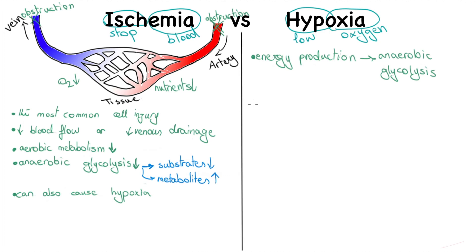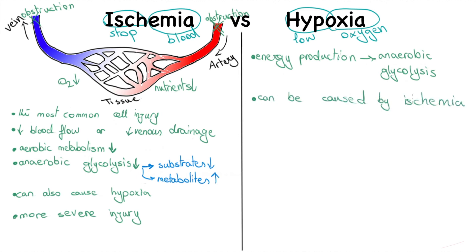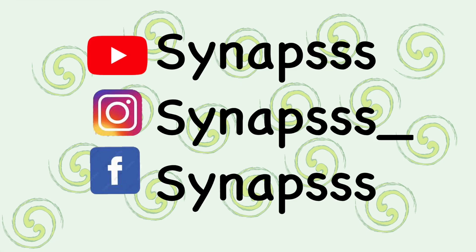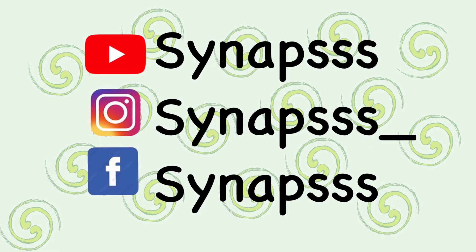As mentioned, ischemia would cause a more severe injury. Hypoxia can be caused by blood flow obstruction or ischemia, but it can also have other causes — for example, insufficient hemoglobin.